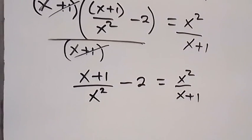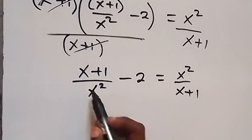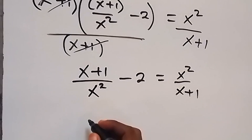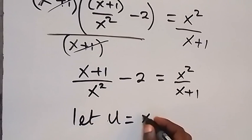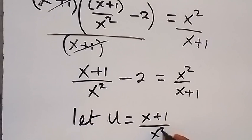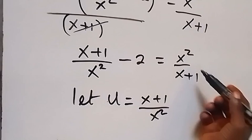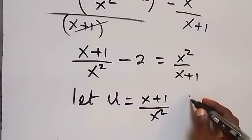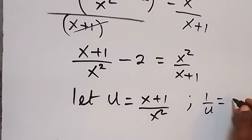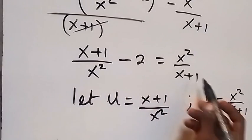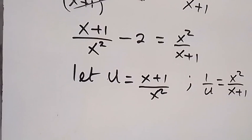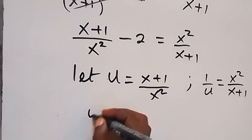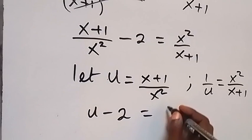And from here, we use a letter to represent x plus 1 over x squared. So, let the letter u be equal to x plus 1 over x squared. Then, this right-hand side is similar to this — just the reciprocal. That means 1 over u equals x squared over x plus 1. When we write this equation back in terms of u, that will become u minus 2 equals to 1 over u.